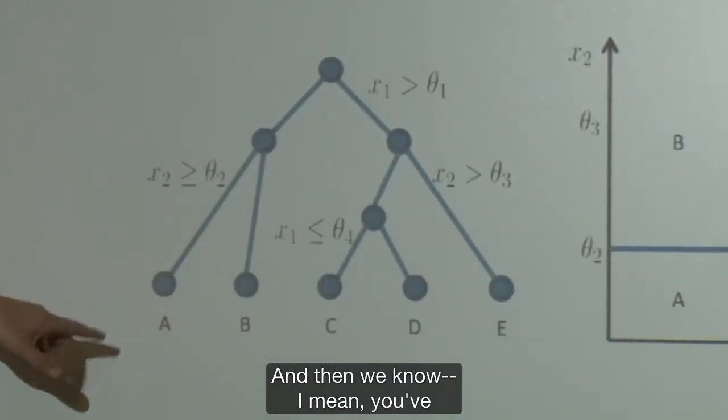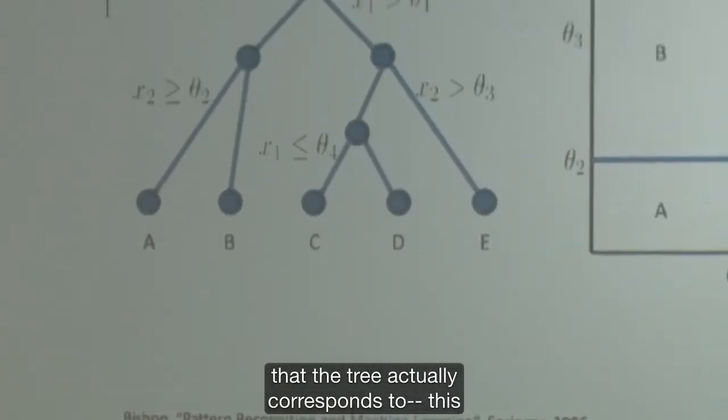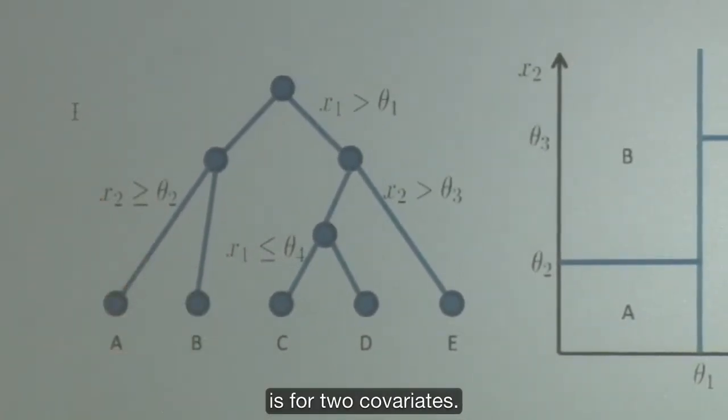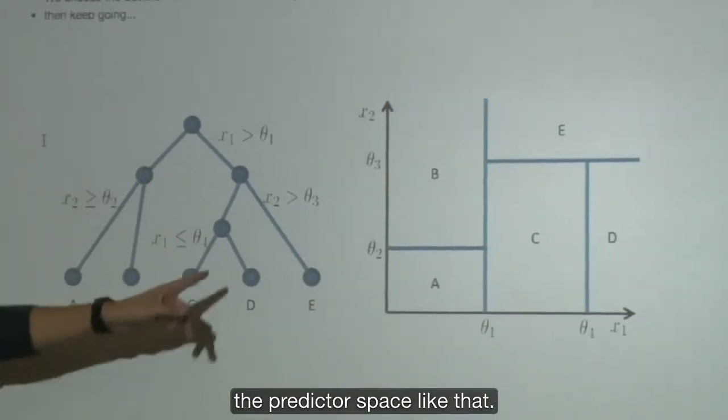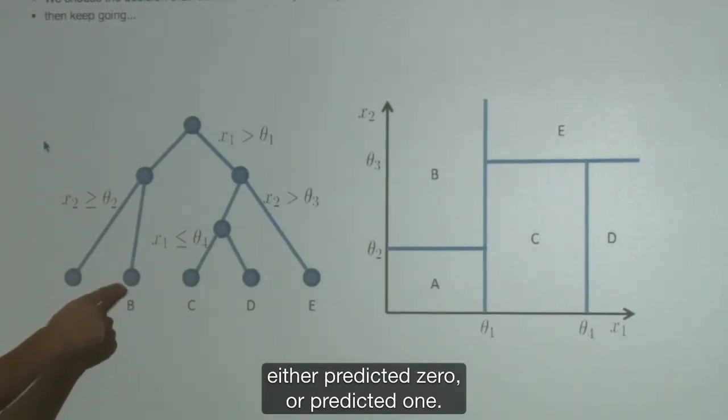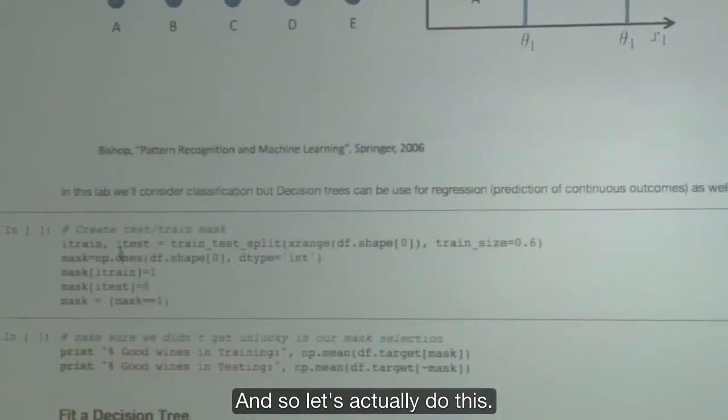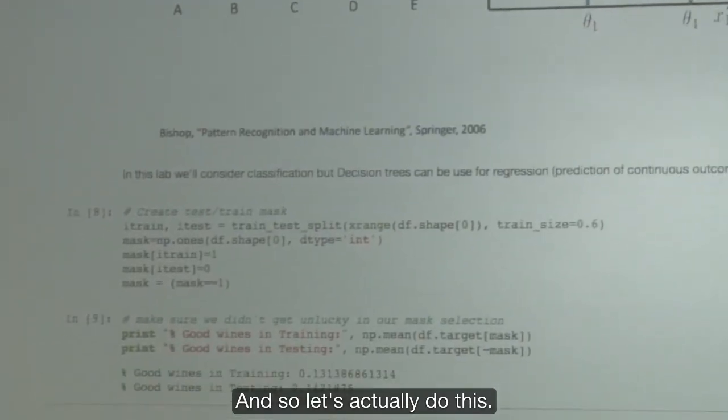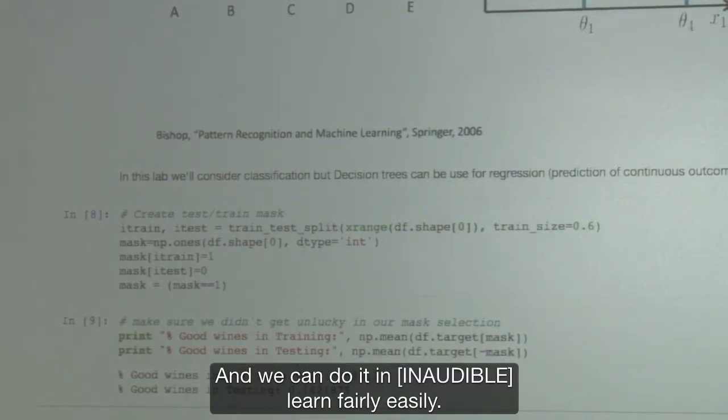And then we know the tree actually corresponds to splitting up the predictor space like that. So in this case, we would have at the end either predicted 0 or predicted 1. And so that's sort of how it works. And so let's actually do this.